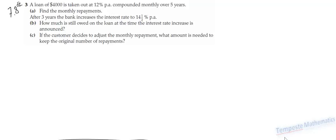Hi there. Today we're going to be looking at an example from the textbook. It's an example from exercise 7.8, number 3. A loan of $4,000 is taken out at 12% per annum compounded monthly over 5 years. Part A asks us to find the monthly repayments.